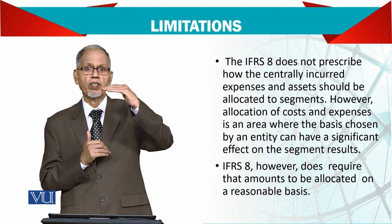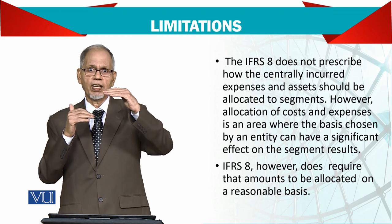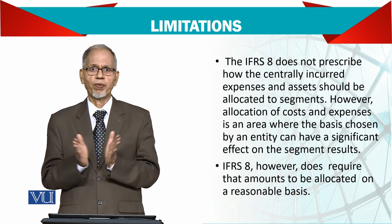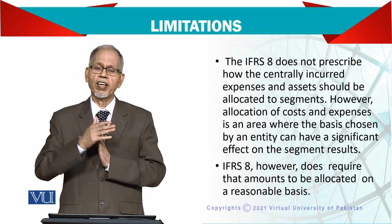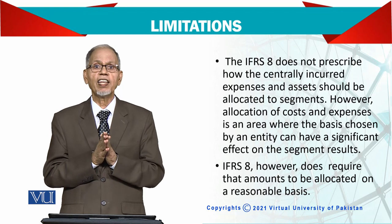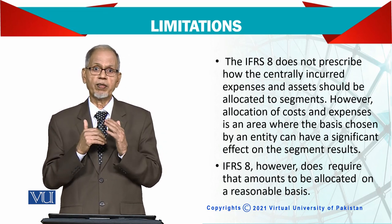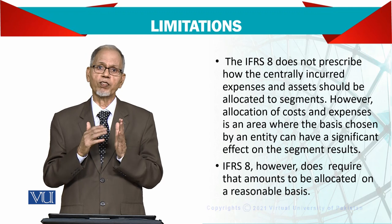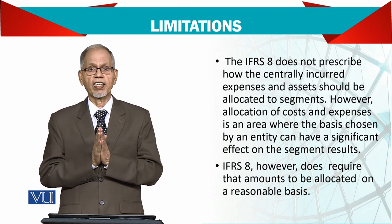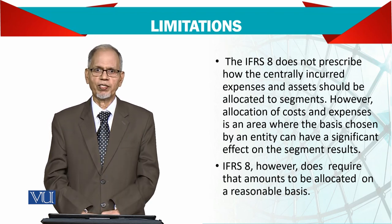If you need to allocate centrally incurred costs, you must find a reasonable basis — not simply a flat 10% each. For example, you could take the sales ratio of each segment and divide the cost proportionally using that ratio. Make sure you always use a reasonable basis for allocation. Thank you very much.